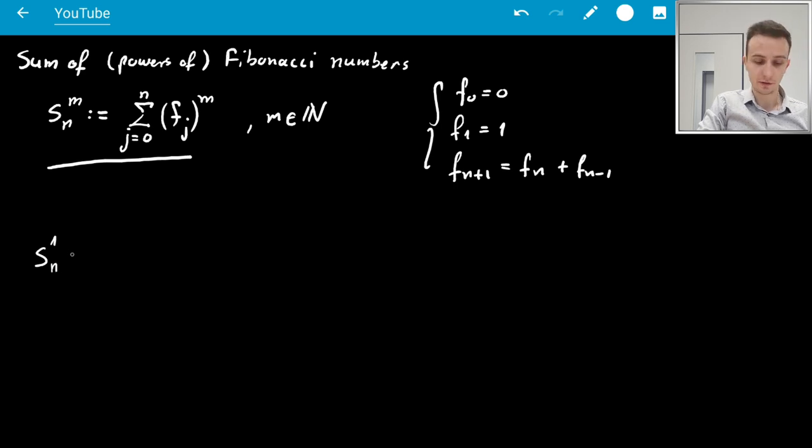You can refer to a previous video for an introduction. The sum of just Fibonacci numbers up to the n-th one is like this. I can rewrite this, starting from 1 because the 0-th one is 0. Now, what I'm going to do is change the index to go back from 0. So, I get j plus 1, and here it's up to n minus 1.